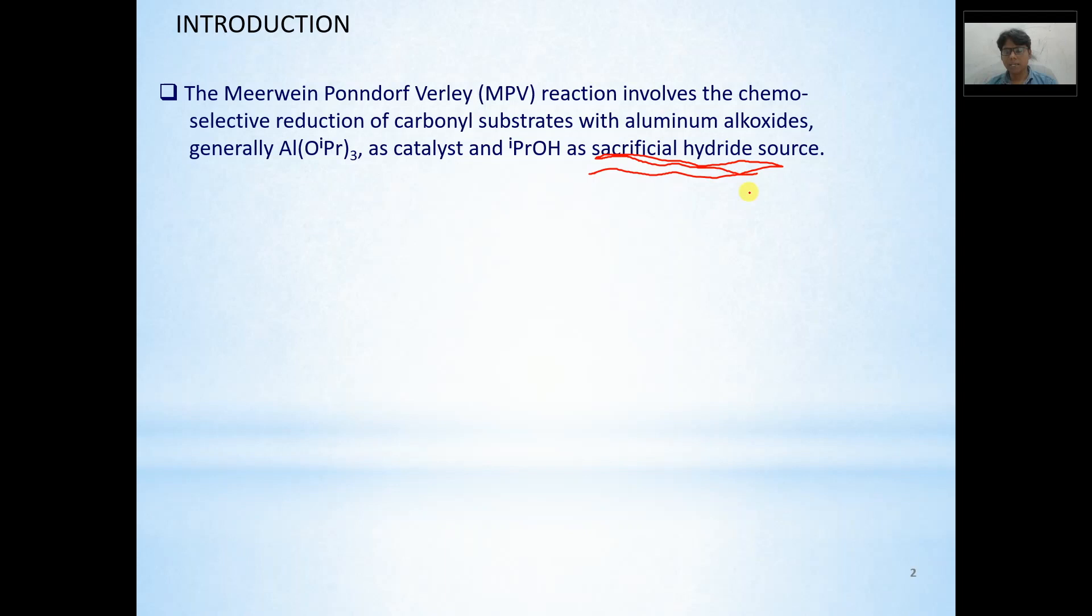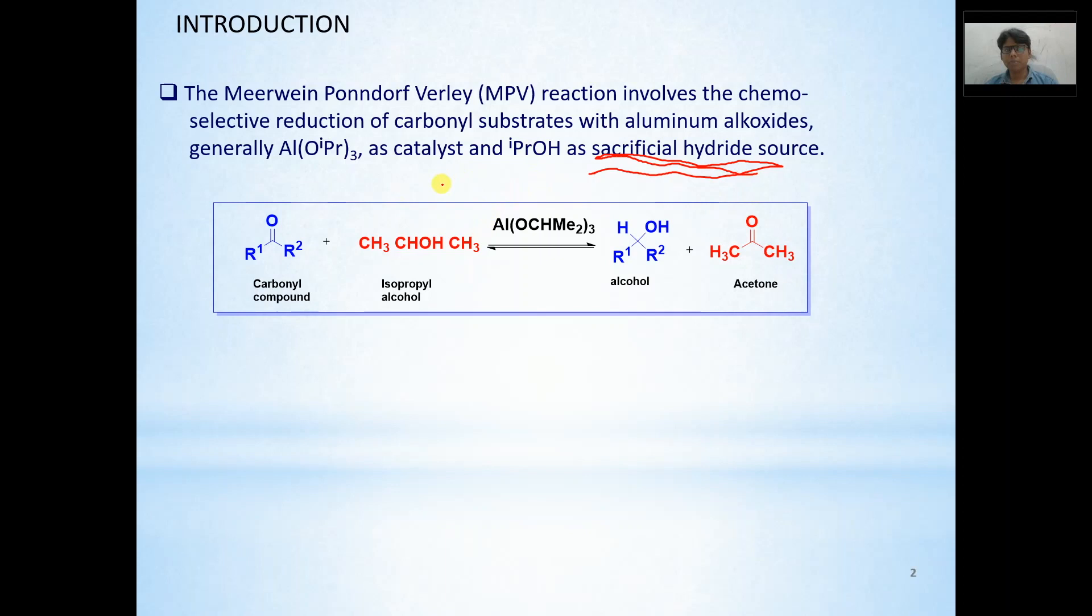Now the general reaction for Meerwein-Ponndorf-Verley reduction is that this is your carbonyl compound R-C-O-R and this is Isopropyl Alcohol as a solvent or the sacrificial hydride source in the presence of Aluminum catalyst, Al-Alkoxide giving alcohol and acetone is removed. One more thing: the reaction nature is reversible.